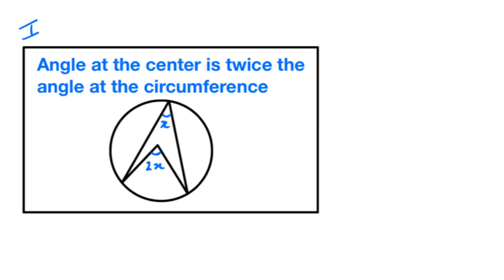The first circle theorem is: the angle at the center is twice the angle at the circumference, and both angles start from the same chord. So if you want to find the angle at the circumference and the angle at the center is given to you, you divide by 2. And if the angle at the circumference is given to you and you want to find the angle at the center, you multiply by 2.